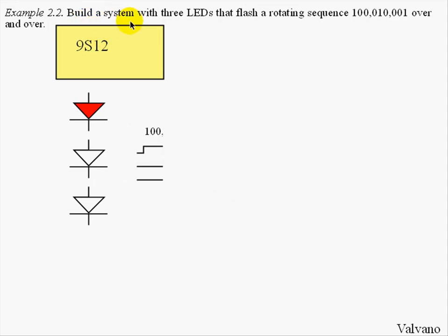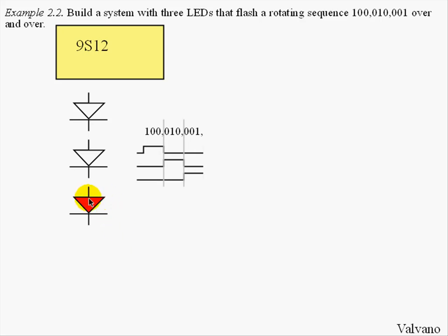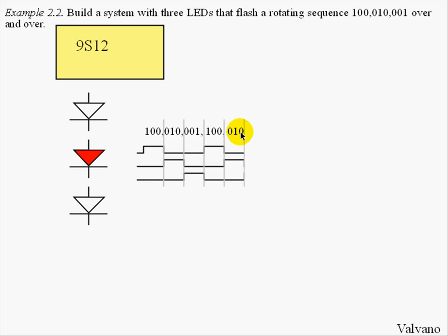The objective is to build a system with three LEDs that flash in a rotating sequence. First the top one is on, then the second one is on, and third the last one is on. The pattern goes one zero zero, then zero one zero, then zero zero one. This pattern of one zero zero, zero one zero, zero zero one repeats over and over.